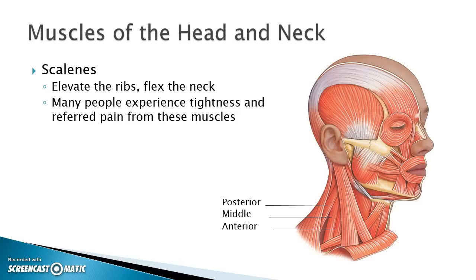The scalenes are three muscles: posterior, middle, and anterior. Their function is to elevate the ribs and flex the neck — for example, when you breathe, the ribs come up, so the scalenes are involved, as well as in lateral flexion of the neck. You can identify them by looking for a triangle formed by the platysma, the sternocleidomastoid, and the trapezius; the three muscles inside that triangle are the posterior, middle, and anterior scalenes.